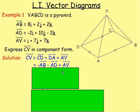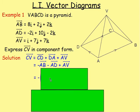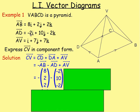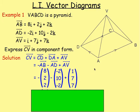Putting them in component form: we've got negative AB, and AB is the vector 8i plus 2j plus 2k, so in component form we have negative of (8, 2, 2). From there we are taking away AD, and AD has the components negative 2, 10, negative 2. And AV has the components 1, 7 and 7. Working that out: negative 8 take away negative 2 plus 1; negative 2 take away 10 plus 7; and negative 2 take away negative 2 plus 7.